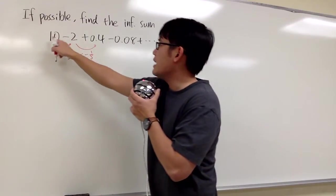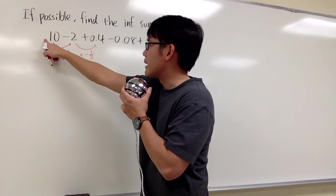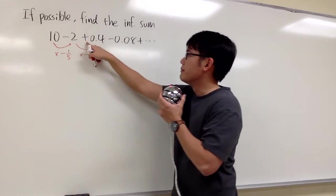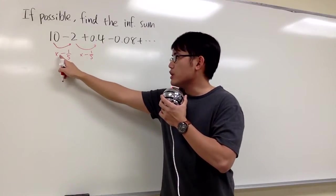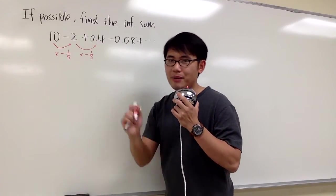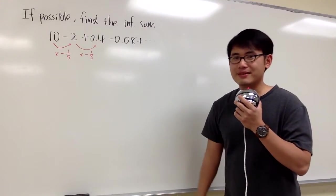Notice that the signs are alternating: the first one is positive, the next one is negative, positive, negative, and so on. As long as we multiply by a negative common ratio, that will take care of it.